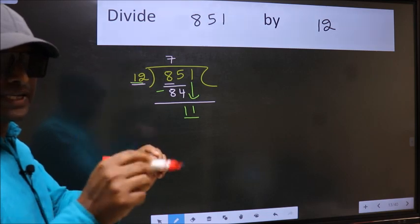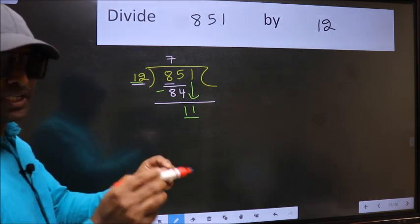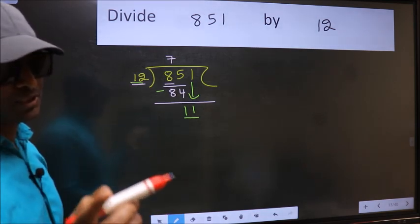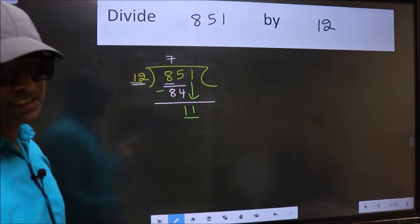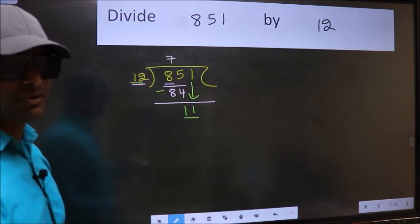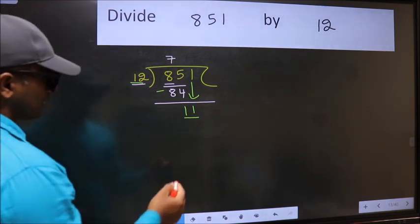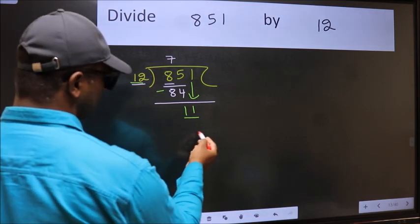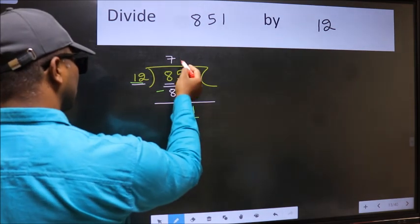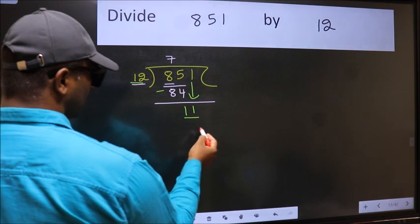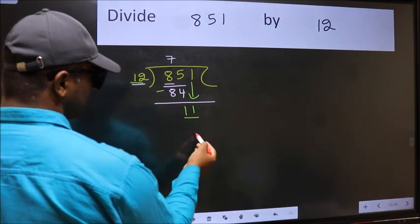Instead, what you should think of doing is: which number should we take here? If I take 1, we will get 12, but 12 is larger than 11. So what we should do is